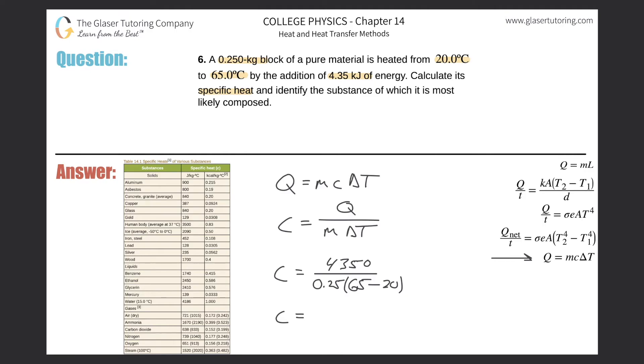Let's do it now: 4350 divided by, in parentheses, 0.25 times 65 minus 20, close those parentheses. Here we get a value of about 387, and the units for specific heat will be joules per kilogram degree Celsius.